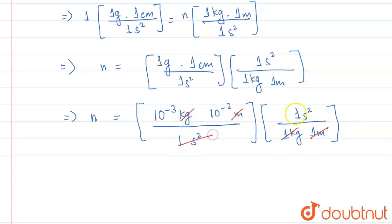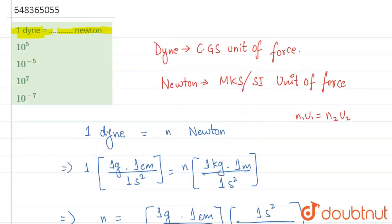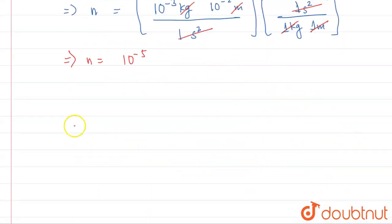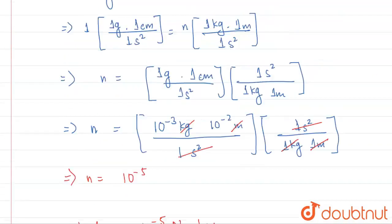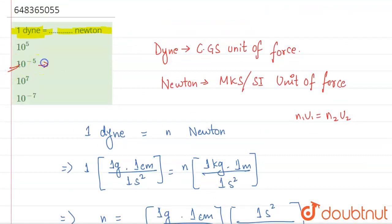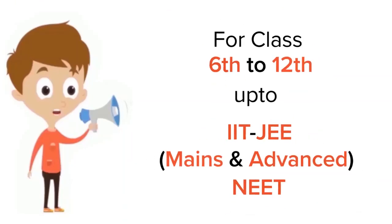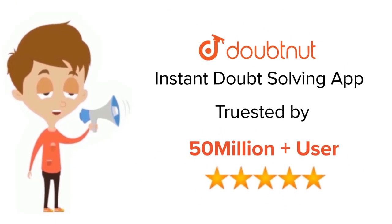So N equals 10 to the power minus five. Therefore, one dyne equals 10⁻⁵ newtons. The answer is option B: 10 to the power minus five.